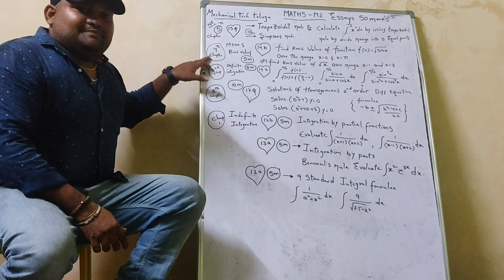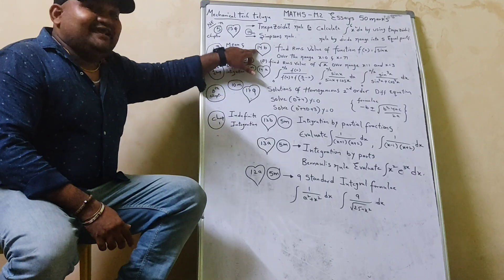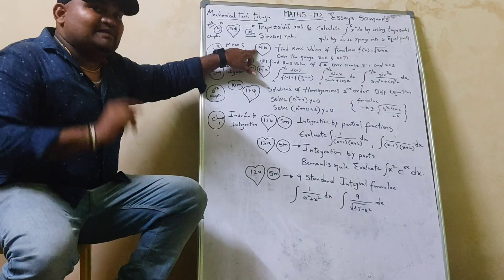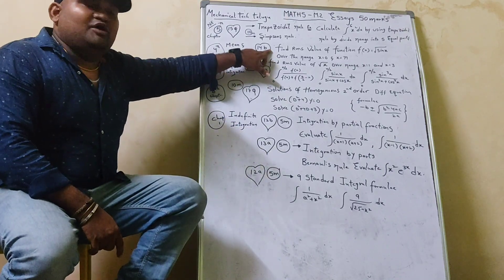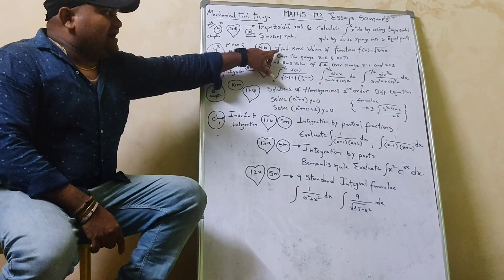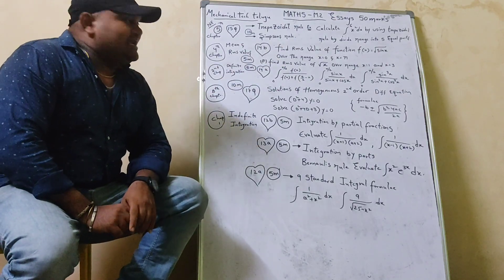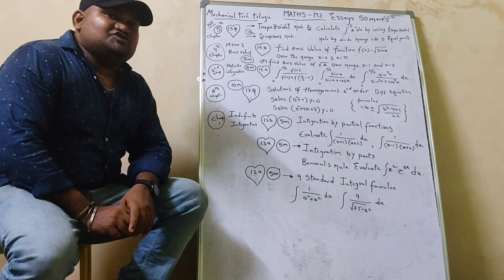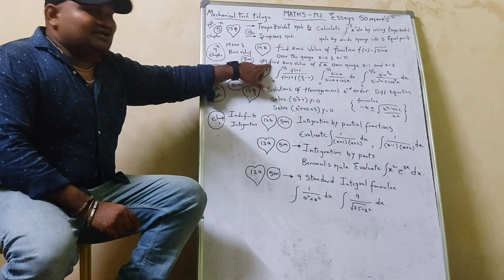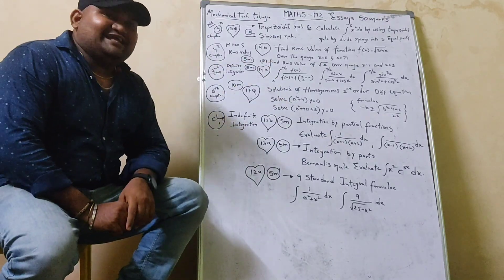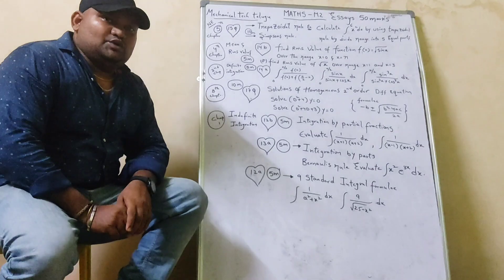Fourth chapter: Mean and RMS values. This begins in the 14th question of the main exam. We have 5 mocks out of 10. Find the RMS value of function f(x) equal to root sin x, with the range x equal to 0 and x equal to pi. As usual, you can model it. Find the RMS value of root x, with the range x equal to 1 and x equal to 3.